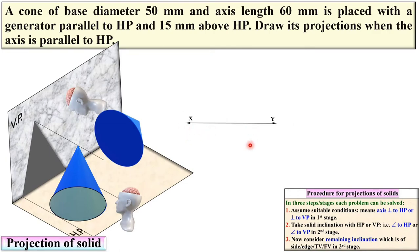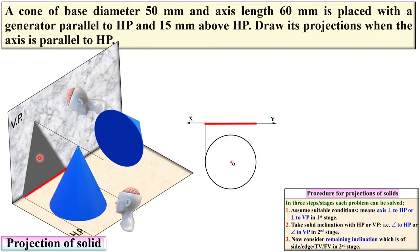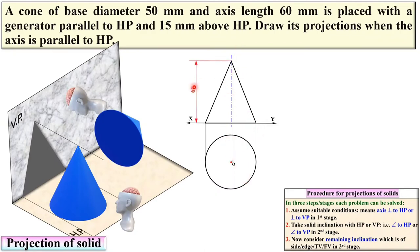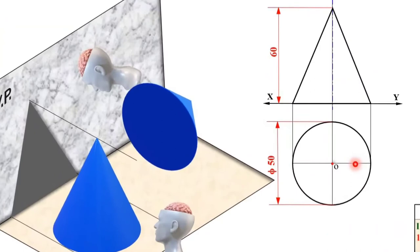First, draw the reference line XY. Then draw the top view, which is a circle — draw it with the help of a compass. Name the center of the circle as O. Through projection, you get the base for the front view on the XY line. The height of the axis is 60 mm, so mark 60 mm and draw the front view. Divide the circle into 8 equal parts.